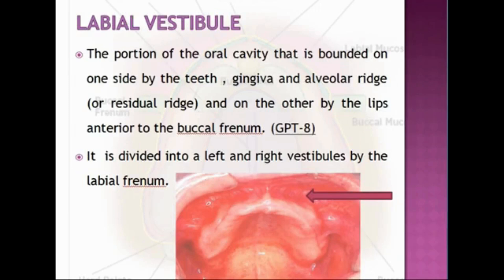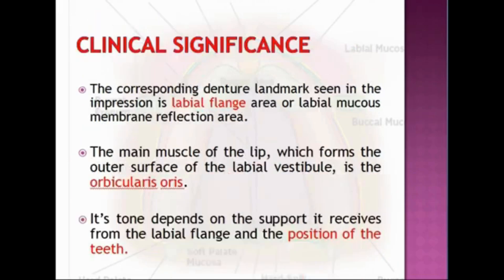The labial vestibule is a portion of the oral cavity bounded on one side by the teeth, gingiva, and alveolar ridge, and on the other side by the lips, anterior to the buccal frenum. It is divided into right and left vestibules by the labial frenum. The corresponding denture landmark seen in the impression is called the labial flange area, which lies between the labial and buccal frenum.